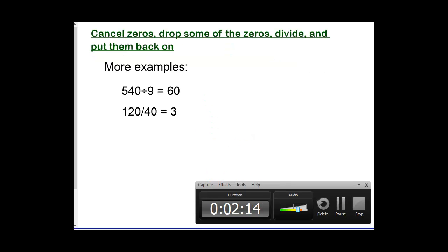Here are a couple more examples. 540 divided by 9 will be 60. No zeros cancel on that one. 120 divided by 40 is 3. All of the zeros cancel on that one.